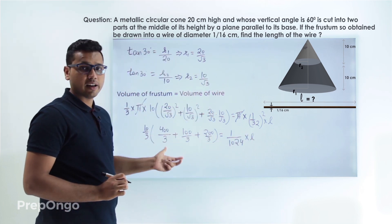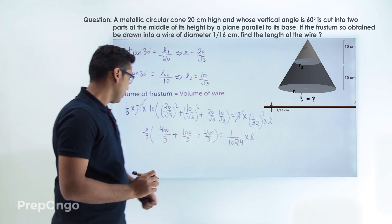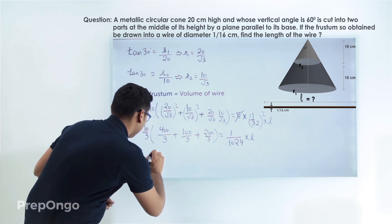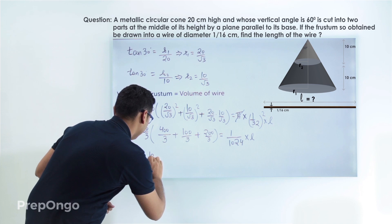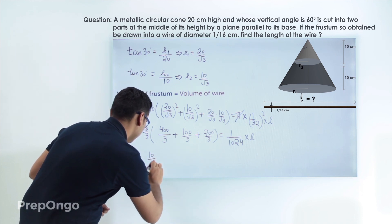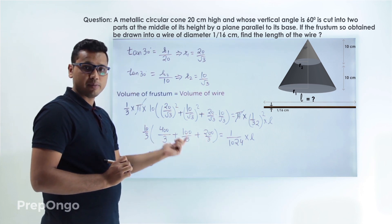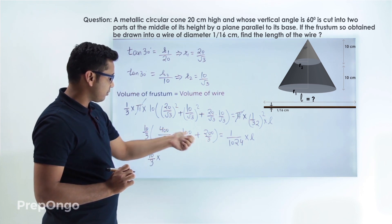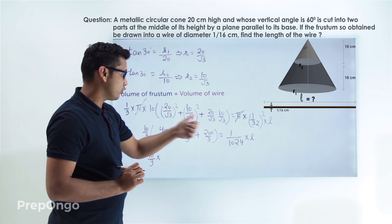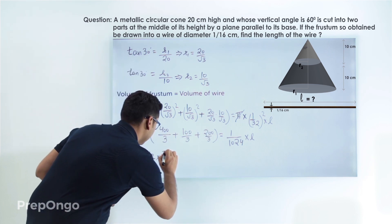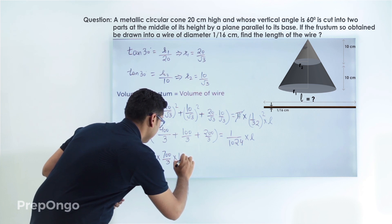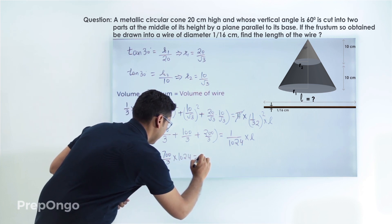Now just cross multiply and get the value of L. So finally this will come out to be 10 by 3 into, take the LCM. LCM will be 3. So this will be 400 plus 100, 500, 200, 700. 700 upon 3 into 1024 is equals to L.